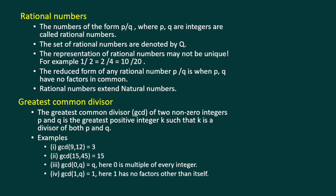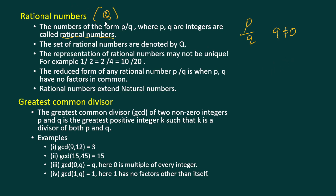Now the main topic: rational numbers. A number which can be written in the form p by q, where q is not equal to zero, is called a rational number. The set of rational numbers is denoted by Q.